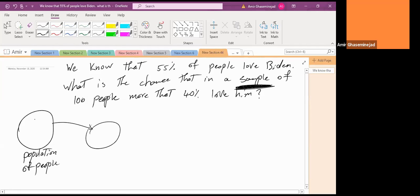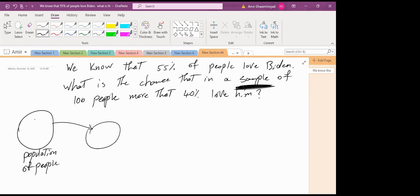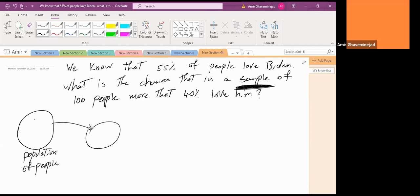What do we know about the population of people? 55% of those people love Biden. But do we know their average? No, this is not average. This is the proportion or percentage. So what we know is that the proportion of the people in the population who love Biden is 0.55. This is the only thing that we know.